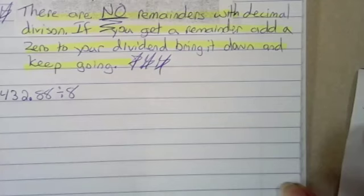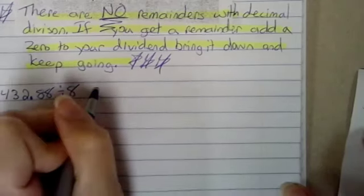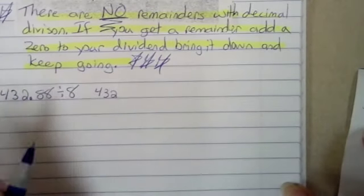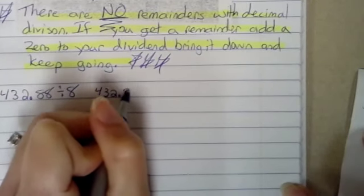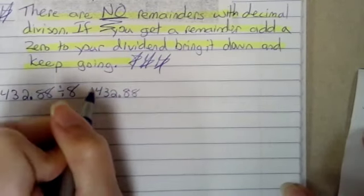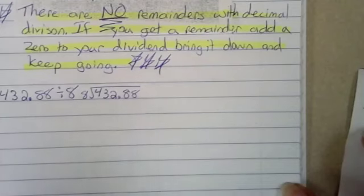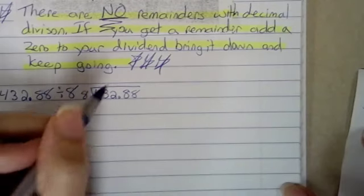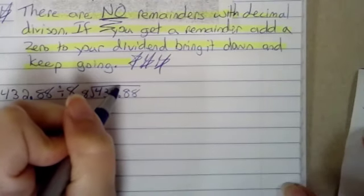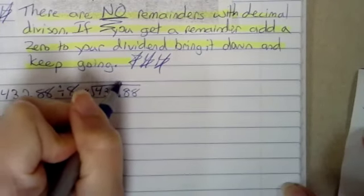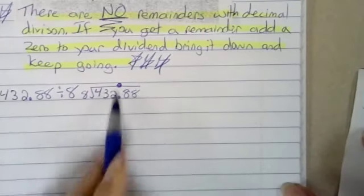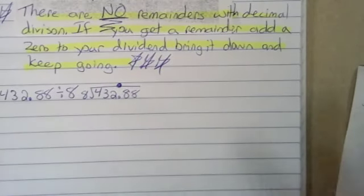So the first step says to write the problem using the division box. So we're going to write 432 and 88 hundredths divided by 8. The second step says write the decimal point in the quotient directly above the decimal point in the dividend. And Miss Bridges sings, move it on up to the top, moved it straight up. Now we're going to divide like normal.